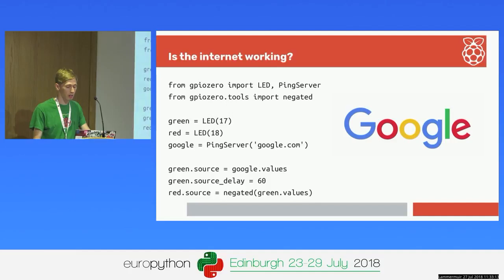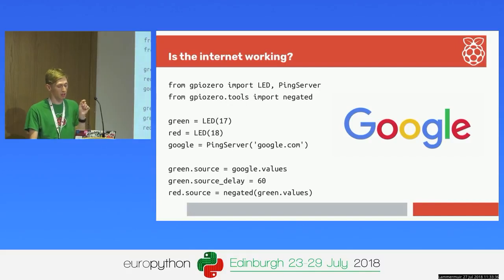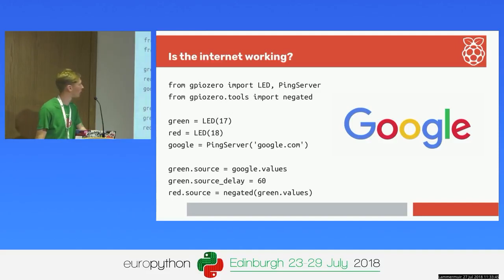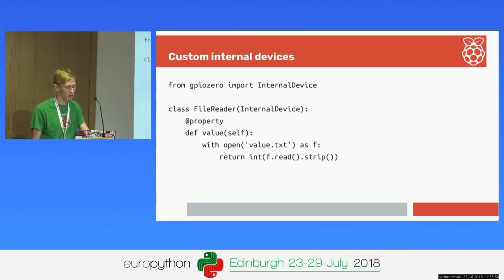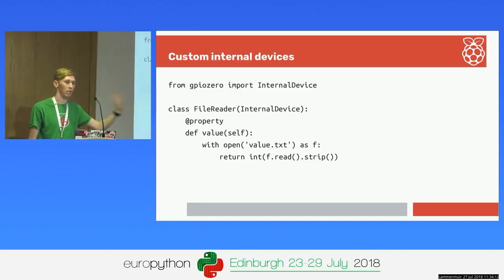Another example is ping server - it's either active if it can do a successful ping or inactive if it can't. Using source delay, you set how often it should read, so it only pings Google every 60 seconds. The green LED is set to match the Google values looking every minute, and the red LED just negates whatever the green is - so either the green or red LED is on according to whether it can access Google. You can also define your own internal devices by subclassing the internal device class and implementing how it reads its value - for instance, reading from a file containing an integer, with some interface that writes a 0 or 1 to set an LED accordingly.